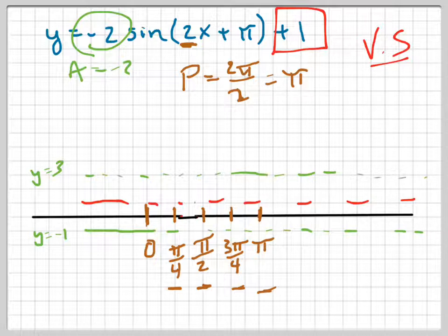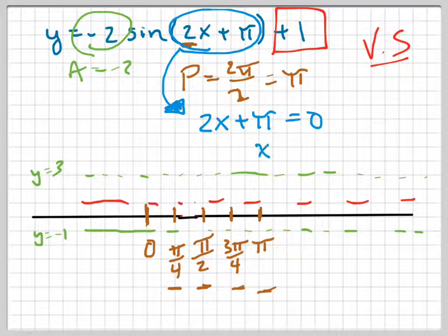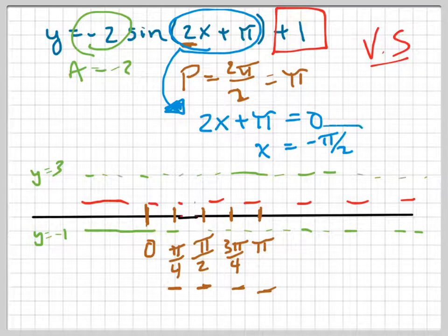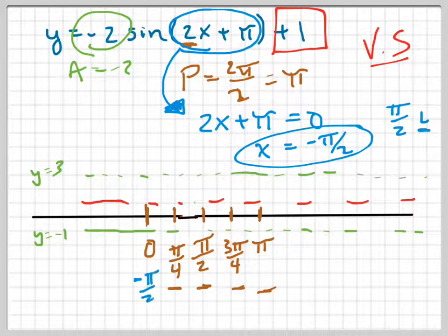The last thing and the hardest part is figuring out the horizontal shift — it's always the one that tricks people the most. What I'm going to do is take 2x plus pi, set it equal to 0, and solve for x, which gives negative pi over 2. That tells me I shift it pi over 2 to the left. I would have started at 0, but instead I'm going to subtract pi over 2 from everything.